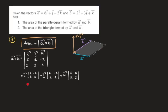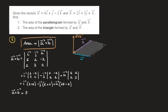Calculating each 2×2 determinant: i times (1×1 minus 3×(−2)) = i times (1 + 6) = 7i; minus j times (6×1 minus 2×(−2)) = minus j times (6 + 4) = −10j; plus k times (6×3 minus 2×1) = k times (18 − 2) = 16k. So the cross product a cross b is equal to 7i minus 10j plus 16k.